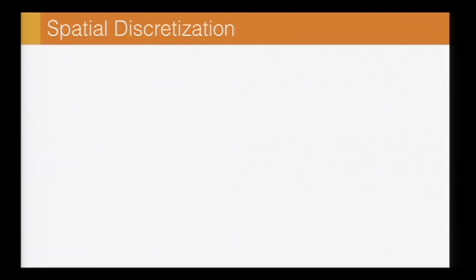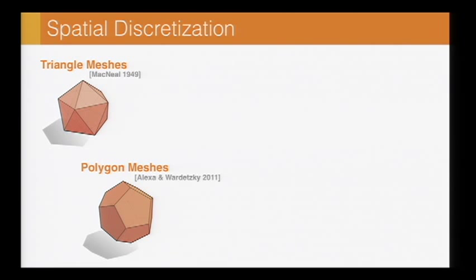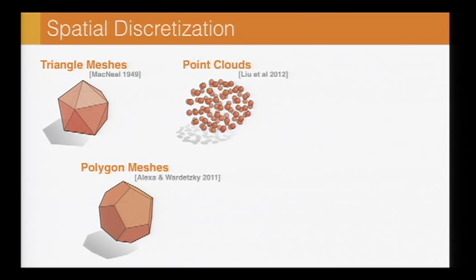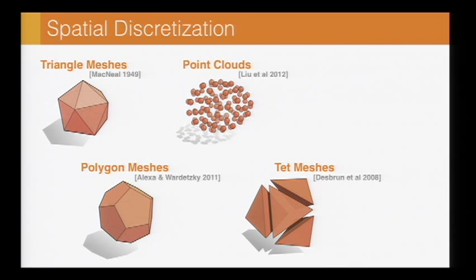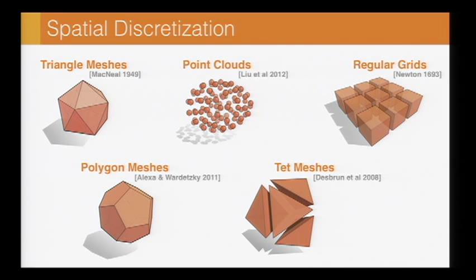So throughout all the examples I'll show and discuss in this talk, I'm just going to set t to h squared, where again h is the average edge length. In terms of spatial discretization, again, you can use whatever you want. For instance, on triangle meshes, you can use the well-known cotan formula. On polygon meshes, we use a recent polygonal Laplacian introduced by Mark Alexa and Max Wardetzky. There's a lot of nice work being done right now on Laplacians for point clouds, and we used one by Luo et al. On tet meshes, you can use something like discrete exterior calculus, and on regular grids, you can use whatever finite differences you like.